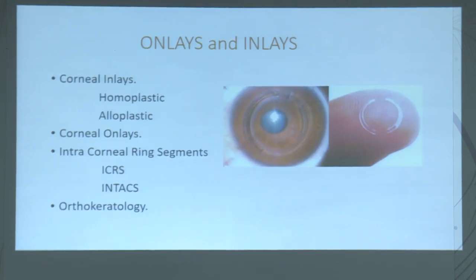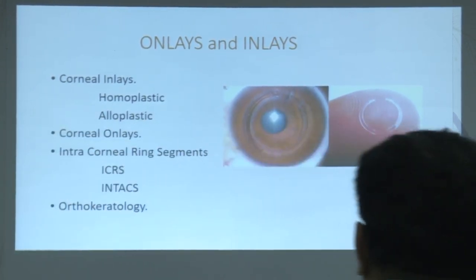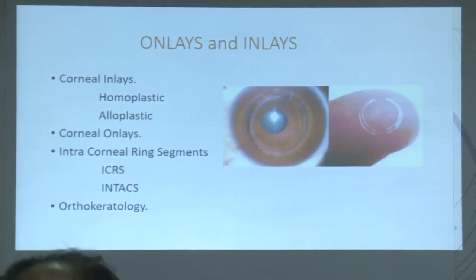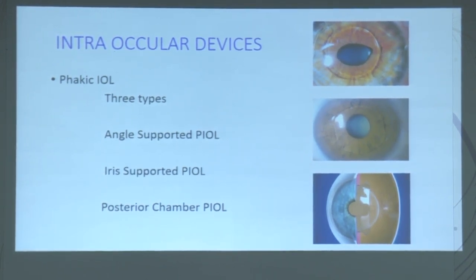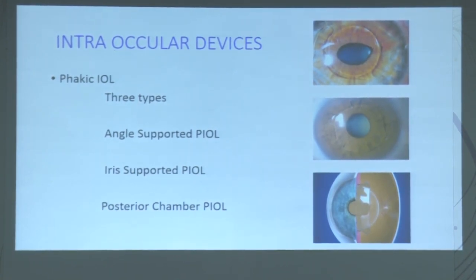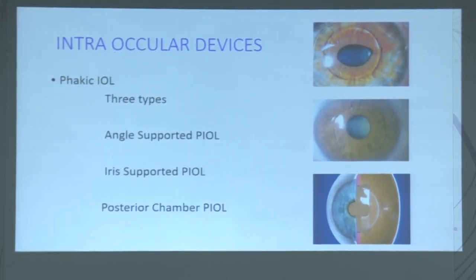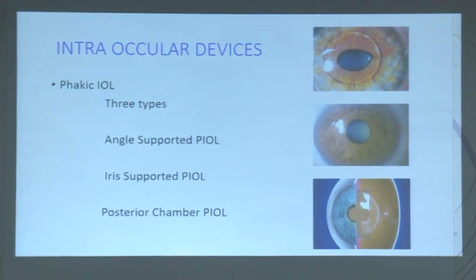Surgical methods were also developed on the surface of the cornea — onlays and inlays. Onlays were placed below the epithelium; inlays were placed on the stroma. Then intraocular devices were developed: phakic IOLs, with three types — angle-supported phakic IOL, iris-supported phakic IOL, and posterior chamber phakic IOL.